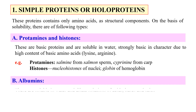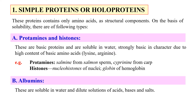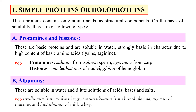Next, albumins. These are widely distributed in nature but are more abundant in seeds. They are soluble in water and dilute solutions of acids, bases, and salts. Examples include ovalbumin from the white of eggs, serum albumin from blood plasma, and myosin of muscle.